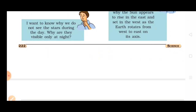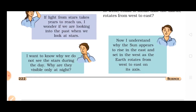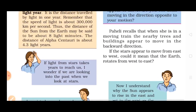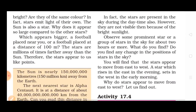Why do we not see the stars during the day? Why are they visible only at night? The stars are not visible during the day because the sunlight is so bright. We cannot see the stars during the day. At night, because there is no sunlight, the stars are visible. In fact, the stars are present in the sky during the day time as well.